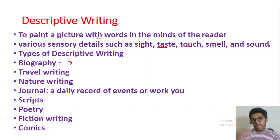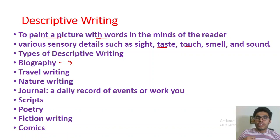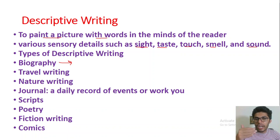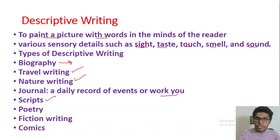If you write about education and family background and all of these things, it's basically called a biography. When someone tells about himself or herself — if a person writes a book about their own life — that is called an autobiography, and that is a kind of descriptive writing. Other types of descriptive writing are travel writing, nature writing, and different kinds of journals, like a daily record of events or work that you do.